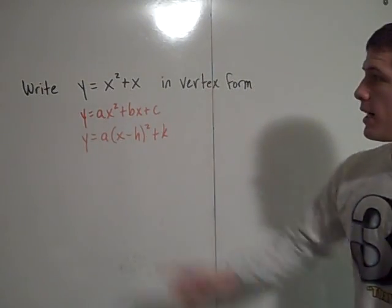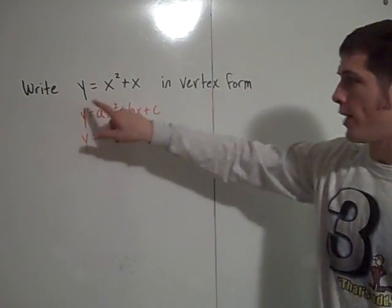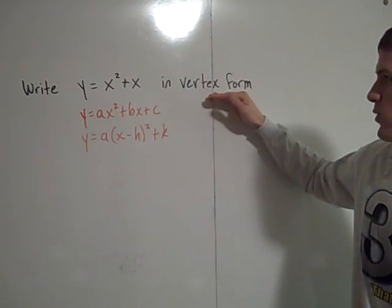I received this question today: how do you write y equals x squared plus x in vertex form?